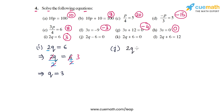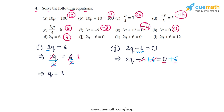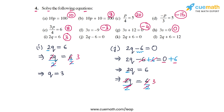In part j the equation is 2q minus 6 equal to 0. First we add 6 on both sides to get rid of the minus 6. The minus 6 and plus 6 terms cancel out on the LHS and 0 plus 6 is 6 on the RHS, giving 2q equal to 6. We then divide both sides by 2: the 2s cancel out and 6 by 2 is 3, so q equal to 3 is the solution in part j.